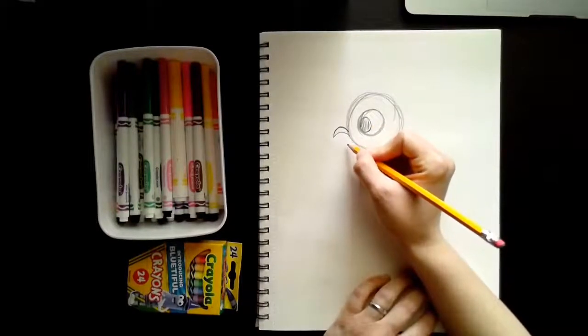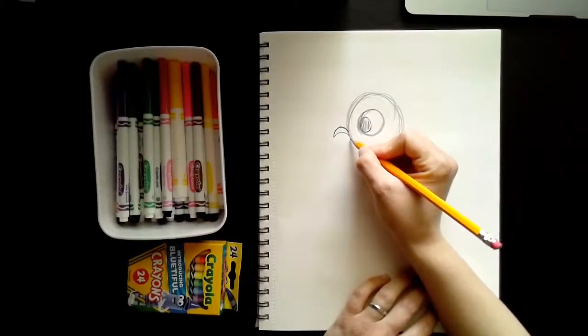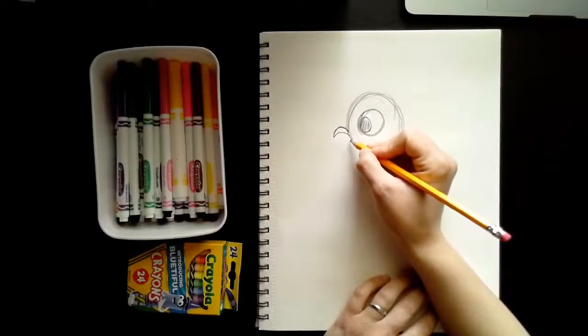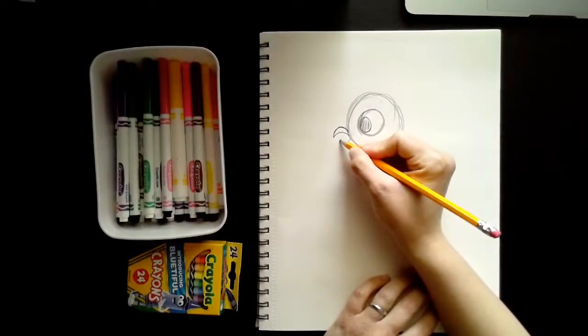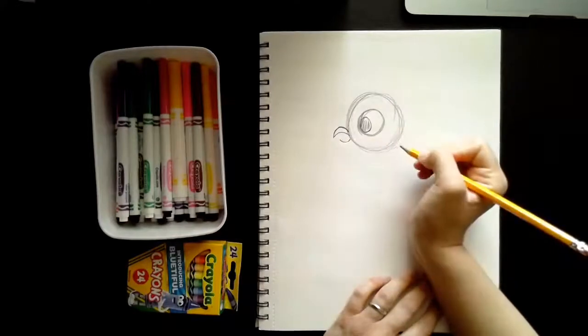And there's the top part of his beak. Now, the bottom part of his beak needs to be a little bit smaller. But this time it's going to be the other way around. It's going to be like a little smile. So I'm going to make a little smile that comes out of the bottom.